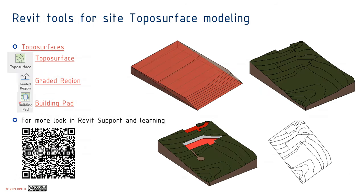The basic tools for creating a top surface using the Revit application are: the top surface tool, graded regions, and building pads. For more information you can scan the QR code and go to the Revit support and learning page, where you can see examples, videos, and explanations on how to use these tools for basic simple projects.